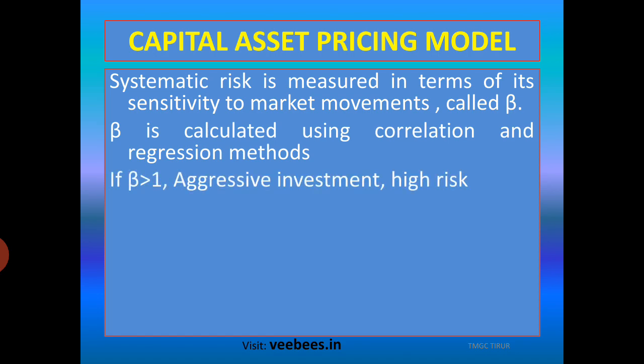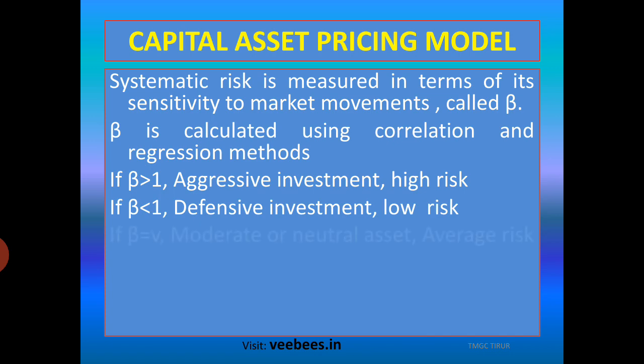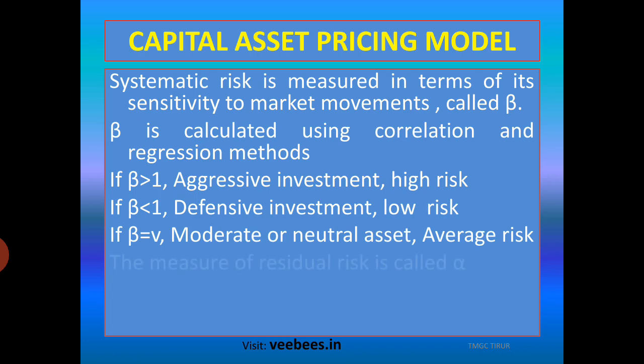If the beta value is greater than one, it denotes that our investment is an aggressive investment. Aggressive investment carries high risk. If the beta value is less than one, the asset or investment is called a defensive asset or defensive investment — there is low risk. If beta value is equal to one, there is moderate or neutral risk.